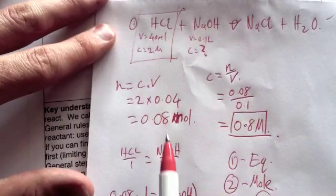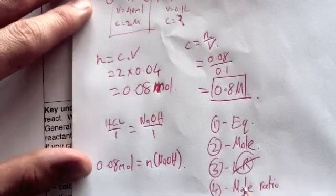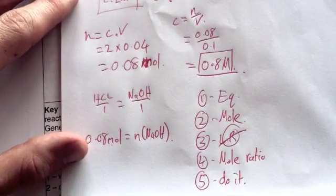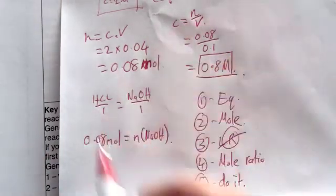If you can't find the number of moles of both reactants, you can't do a limiting reagent, therefore you go and do a mole ratio. Okay? So, that's a basic stoic.